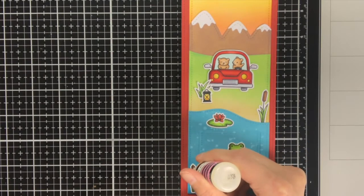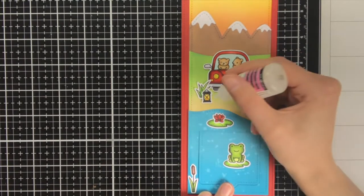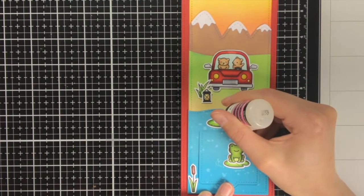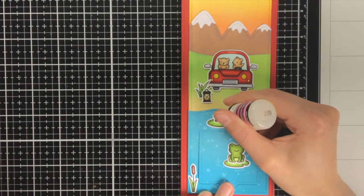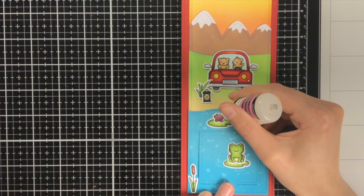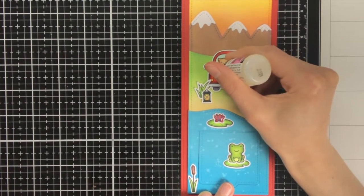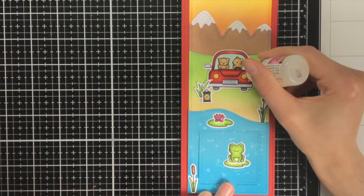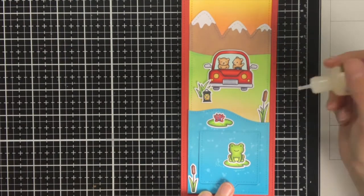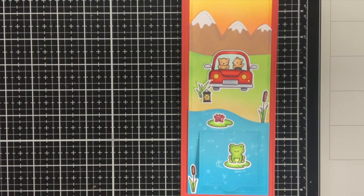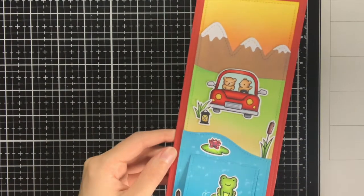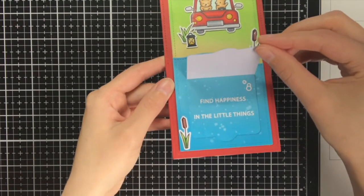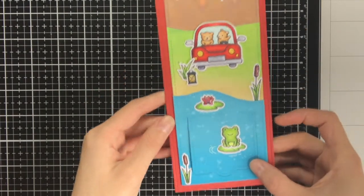So first I put down a layer of Wink of Stella on a number of items, and then I also go over it with the glossy accents. But for the two cattails I did not use the Wink of Stella because I feel that would look a little bit weird, but I still wanted them to have a rounded look so I only put the glossy accents on the cattails, but on the water lily, the lantern and also the car lights I put both the Wink of Stella and the glossy accents. And here you can see how the sentiment is hidden under the flap. I really think this is a nice surprise for the recipient.